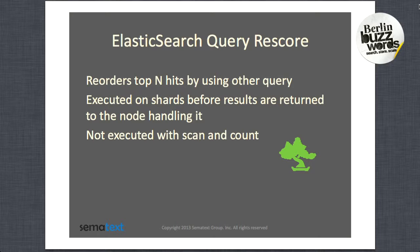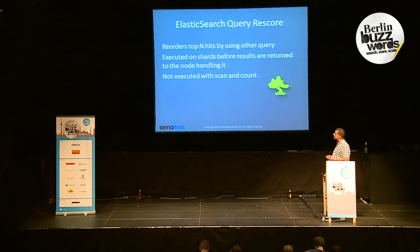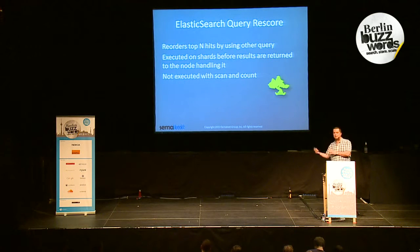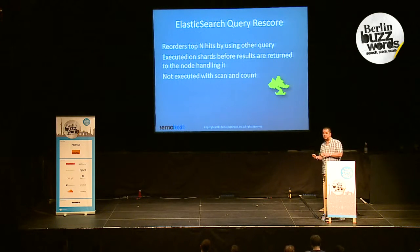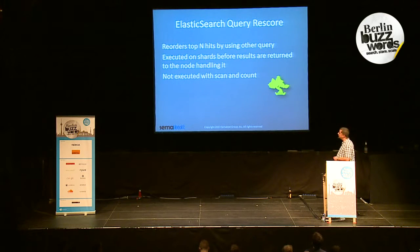One thing introduced in Elasticsearch 0.19 is the Rescore functionality, which reorders the top-hit documents based on another query. It's done because you don't want to reorder the whole document base returned by your query — instead, you want only the top results shown to the user to be reordered based on other criteria. This functionality is executed on shards before results are returned to the gathering node, and is not executed during scan and count.